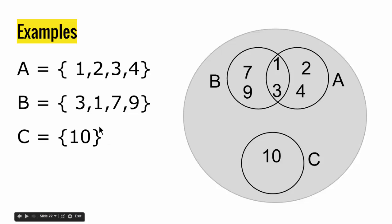So if you want to show the relations between A and B, we draw a diagram. This is set B and this is set A. We see B has 7, 1, 9, 3, and A has 1, 2, 4, and 3, the same as shown here.